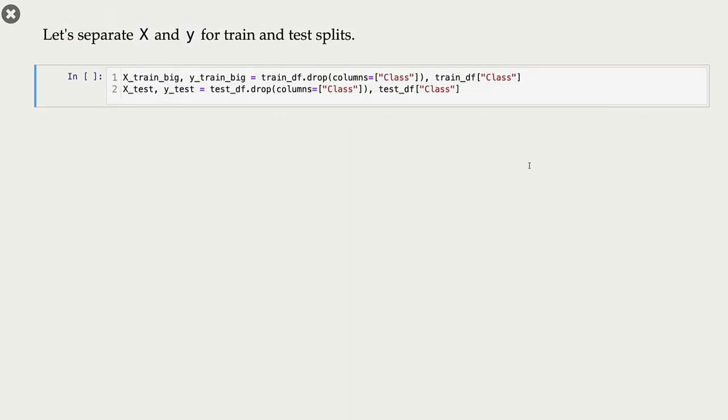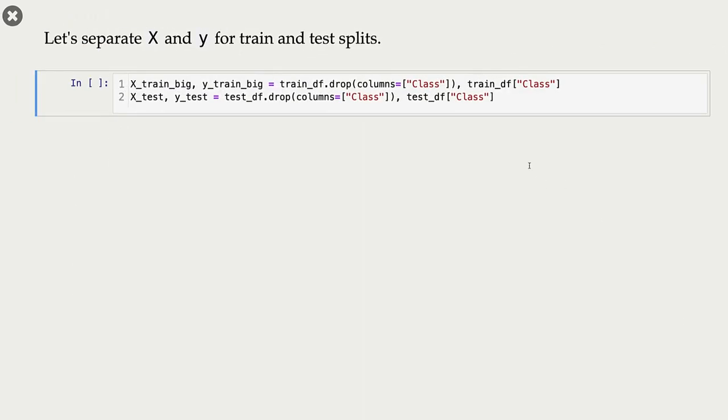Let's separate X and Y. Now here I am creating X_train_big, Y_train_big, and X_test and Y_test. Now why am I creating X_train_big and Y_train_big?